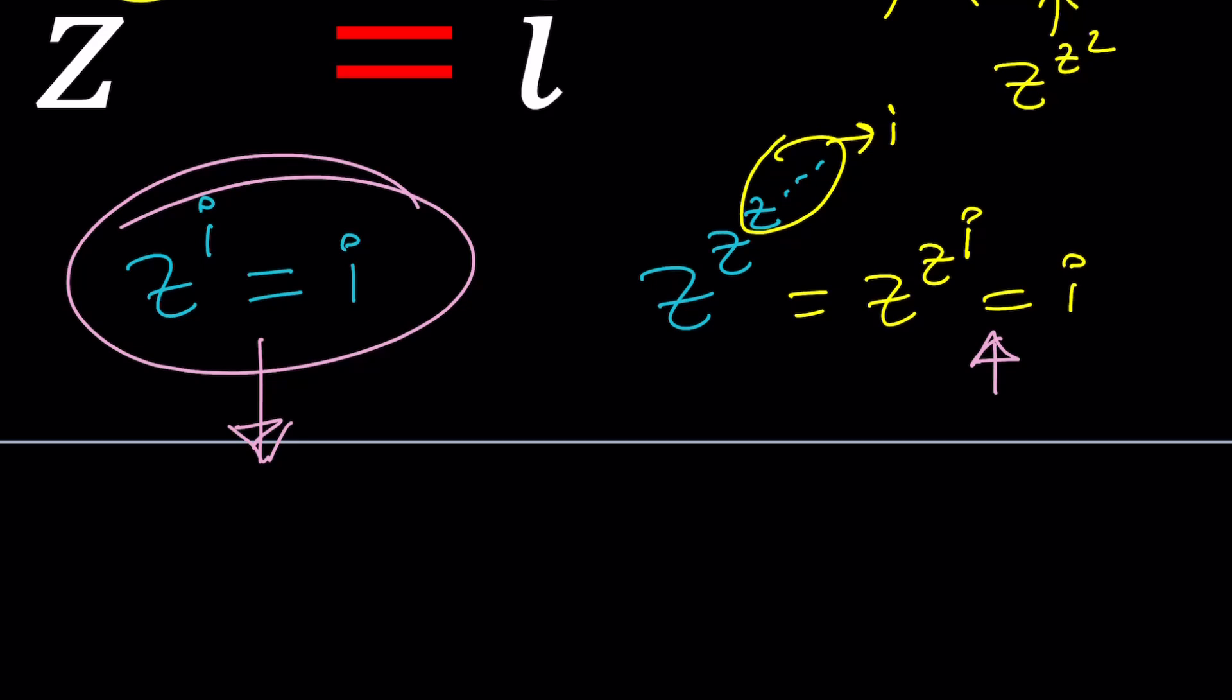This one is kind of easy to solve. You just raise both sides to the power of one over i, and you get z equals i to the power of one over i. That's interesting. What is i to the power of one over i? Well, if you multiply the top and the bottom by negative i, which is the conjugate, then you'll get that this is actually negative i. So it's i to the power of negative i should be the answer. But what is that equal to? Can we really find a value?